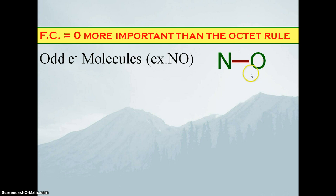We draw our skeletal structure, and then we place the remaining electrons around the outermost atom, giving them an octet. Now in this case we have two atoms, so the question is which one is the outermost atom. The rule for figuring out why we do the outermost atoms is because those are the most electronegative, generally. So given the choice of who gets their octet first, we basically go with the more electronegative element, which in this case would be oxygen. So we're going to give oxygen its octet.